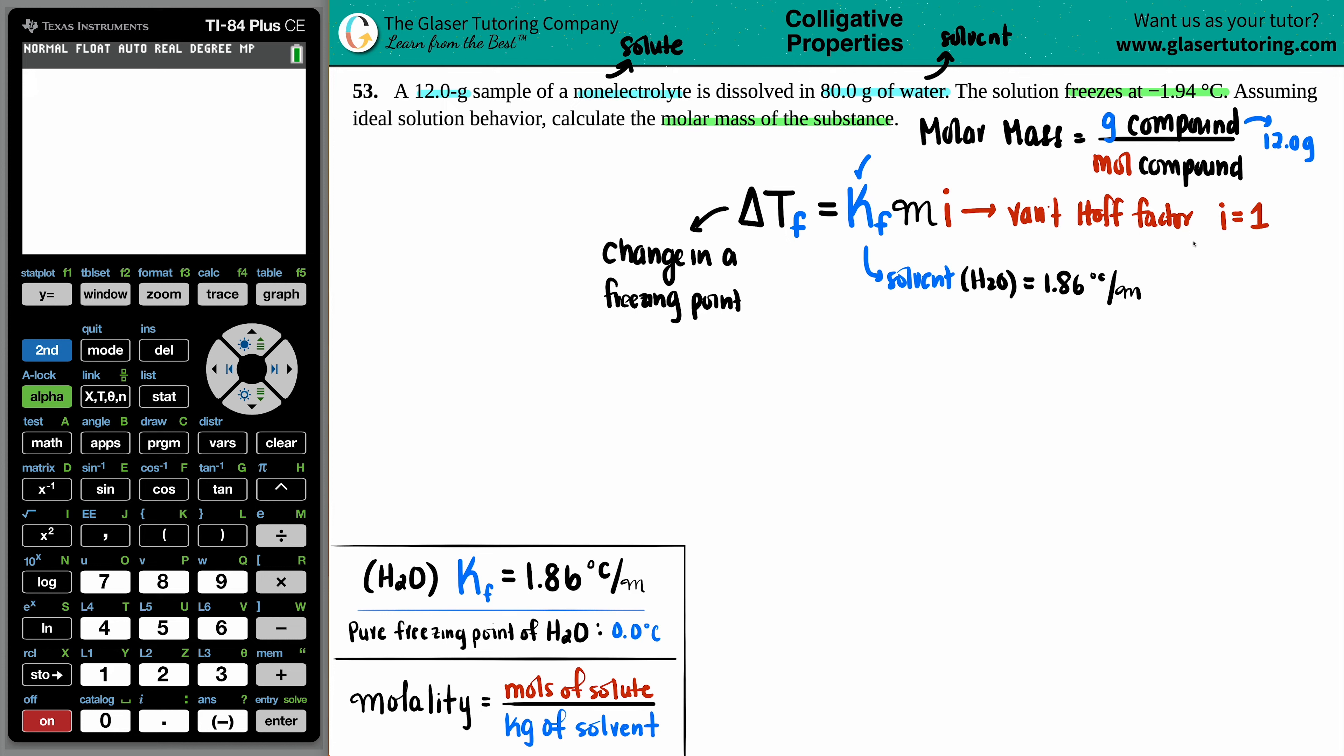So anytime that they say that it's a non-electrolyte, you know that you have an I value of one. So we have this. So we're getting closer.